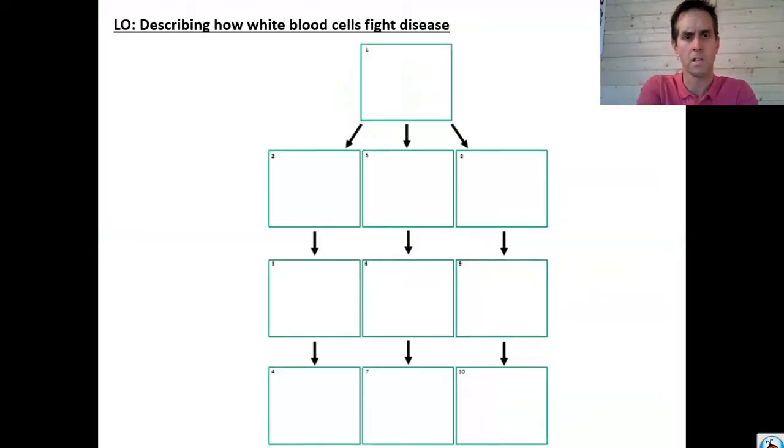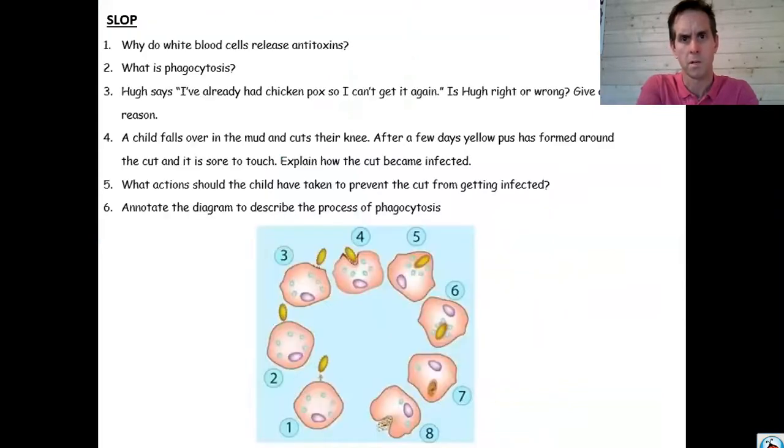So today's lesson is really about putting together the full story about how white blood cells fight disease. You're going to need a few documents again. Something which looks a little bit like this attached to Show My Homework. If you can't print from Show My Homework, then copy things down into lined paper. And then we'll use this.